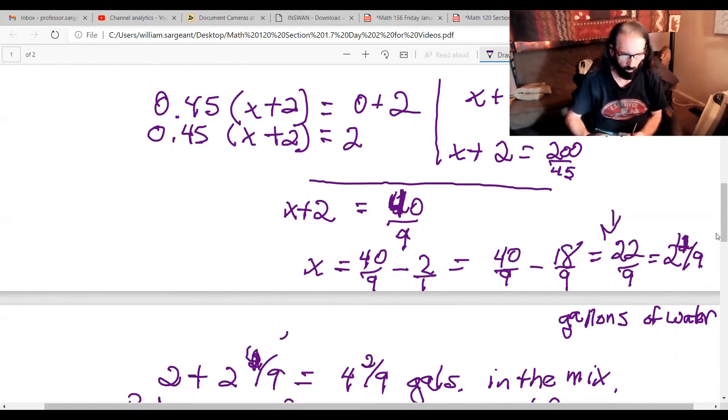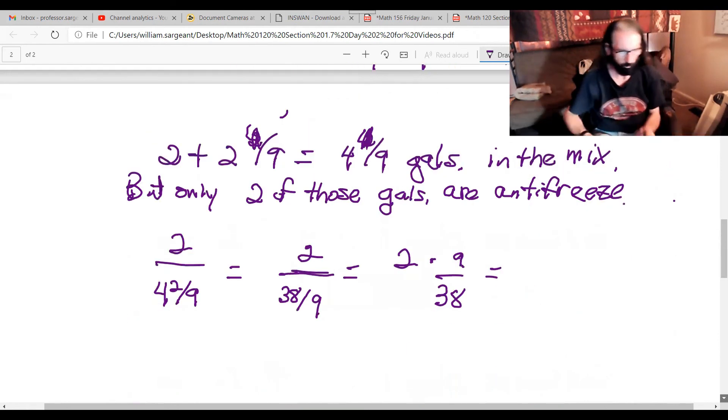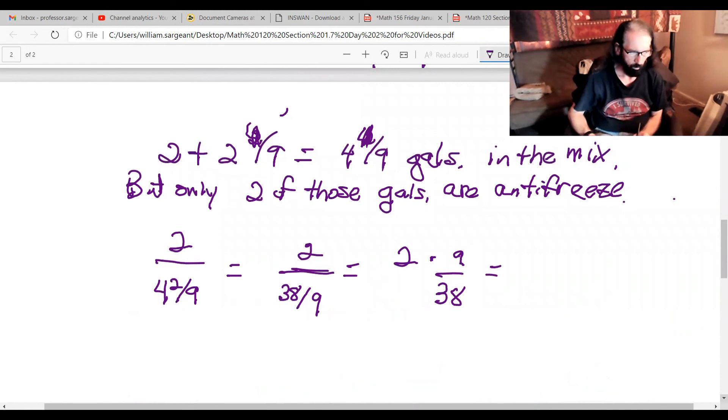Nine goes into 22 twice because two times nine is 18, the remainder is going to be four, and so it's two and four ninths gallons of water. We've got a total in the mix of four and four ninths. Four times nine is 36, 36 plus four is 40.